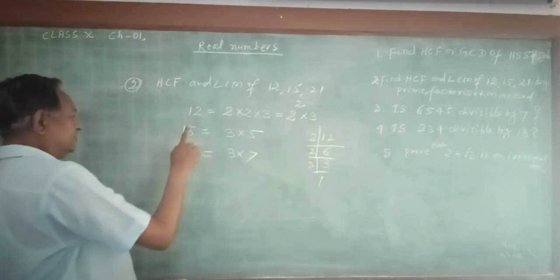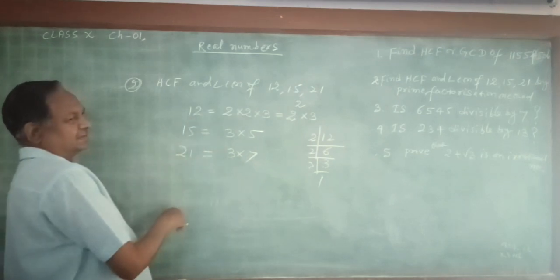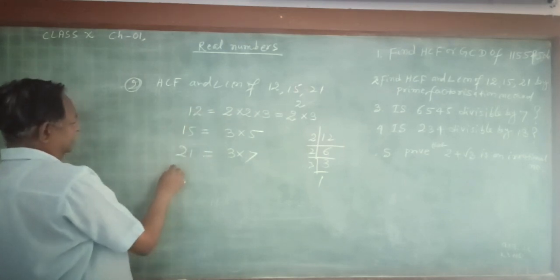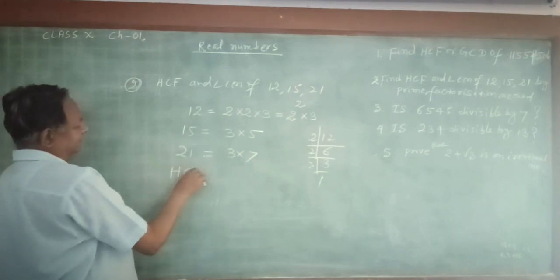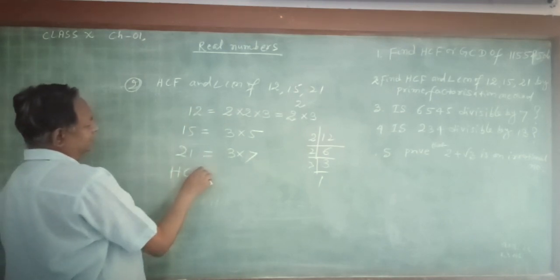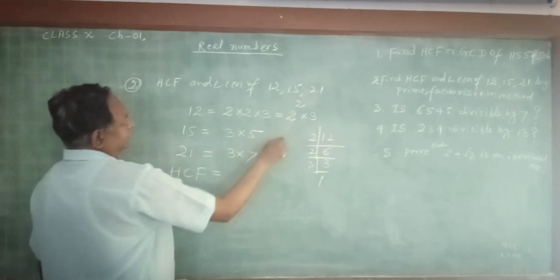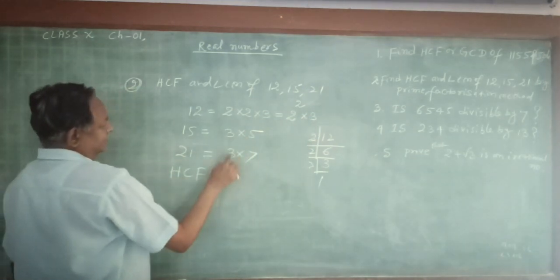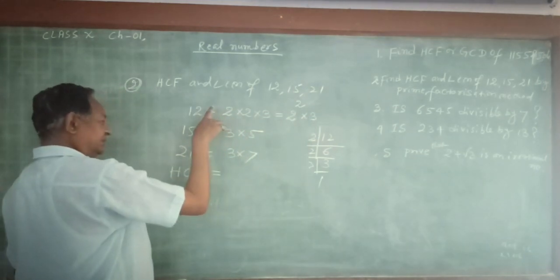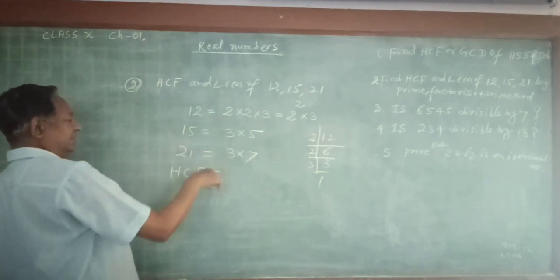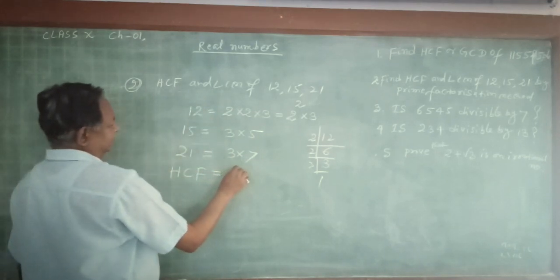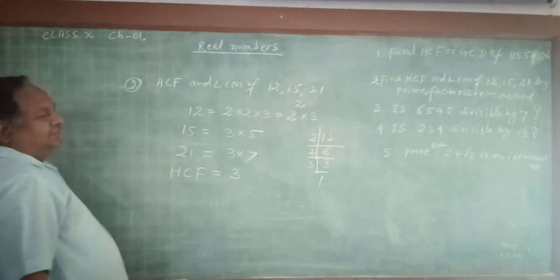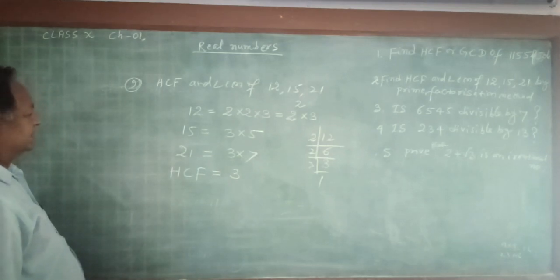The common factors in all these 3 numbers is called HCF — highest common factor. That is 3, which is common in all these 3 numbers. So this is the HCF of these 3 numbers.